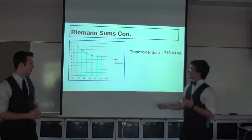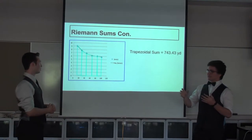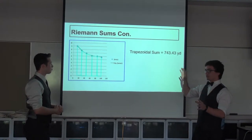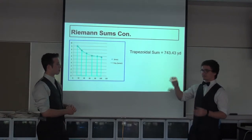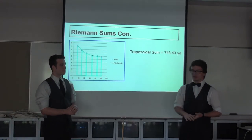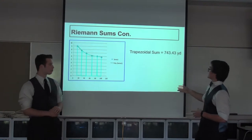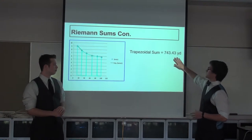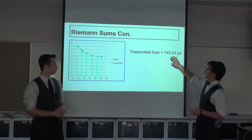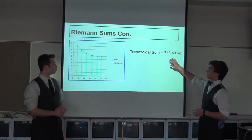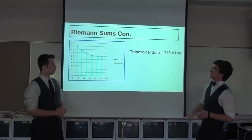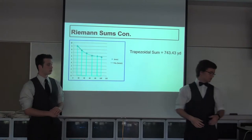You saw how those Riemann sums were pretty far apart from the 750. Coming into trapezoidal sums, it's a lot closer — just a little bit of an underestimate, considering that it is a decreasing function.